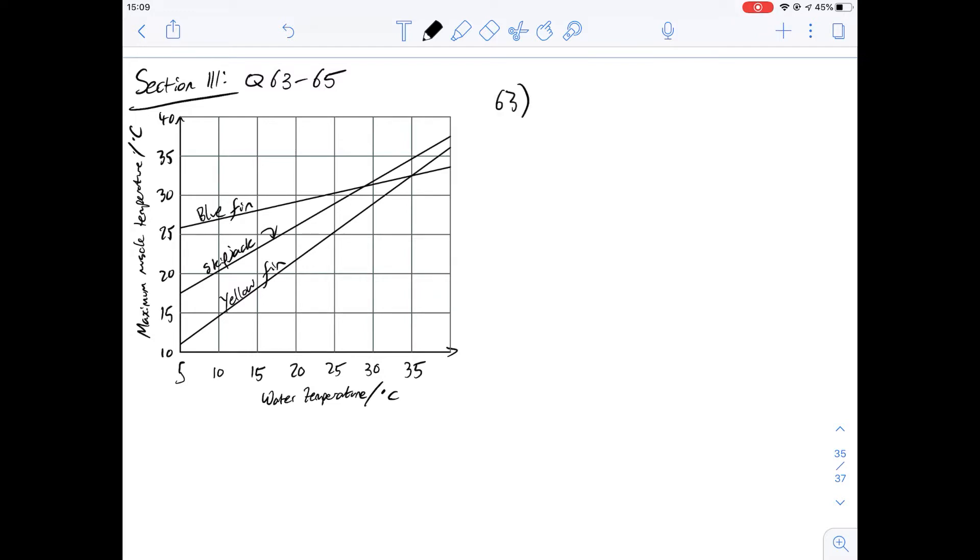Question 63 asks, if the graph lines continue to be linear outside the water temperature range shown, for which of the following is maximum muscle temperature closest to water temperature. I'll move where I've written this and we can imagine what the lines might look like if we were to continue drawing them. This one would continue linearly like this, as with this one and this one.